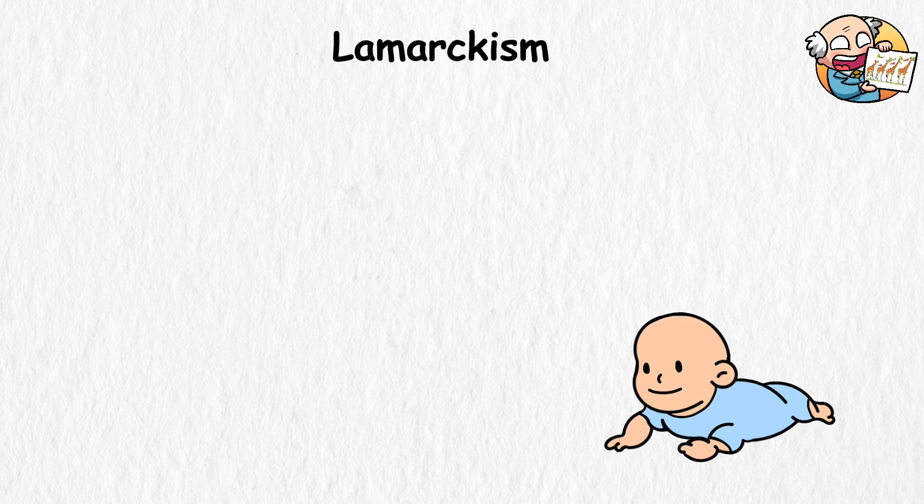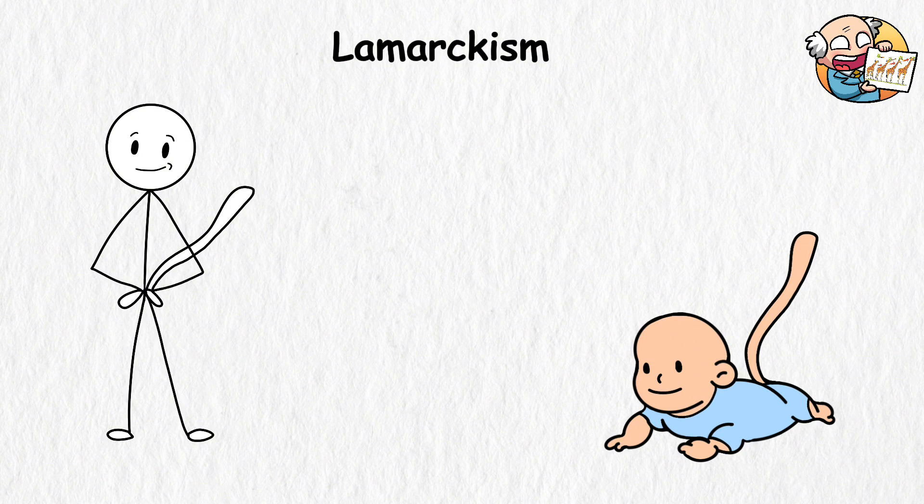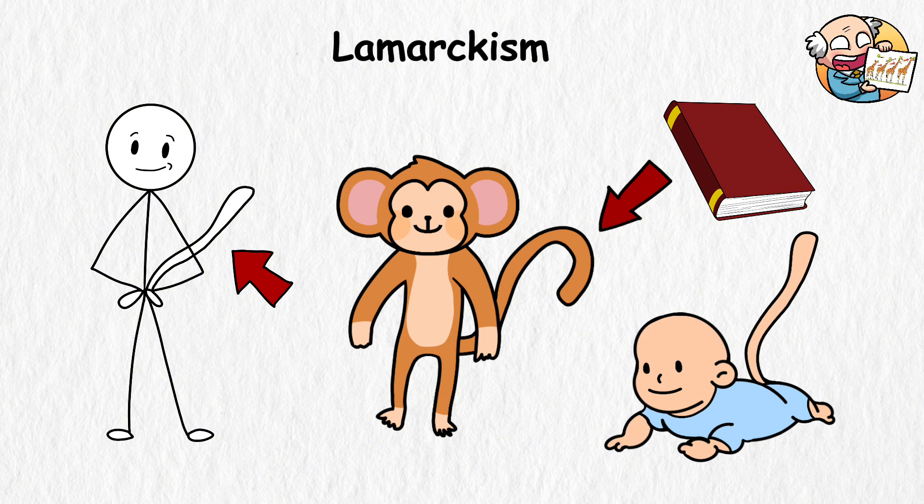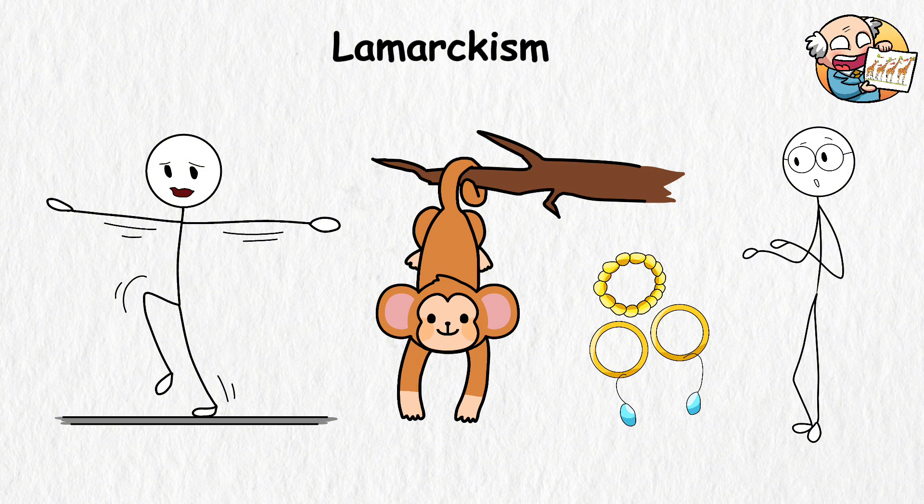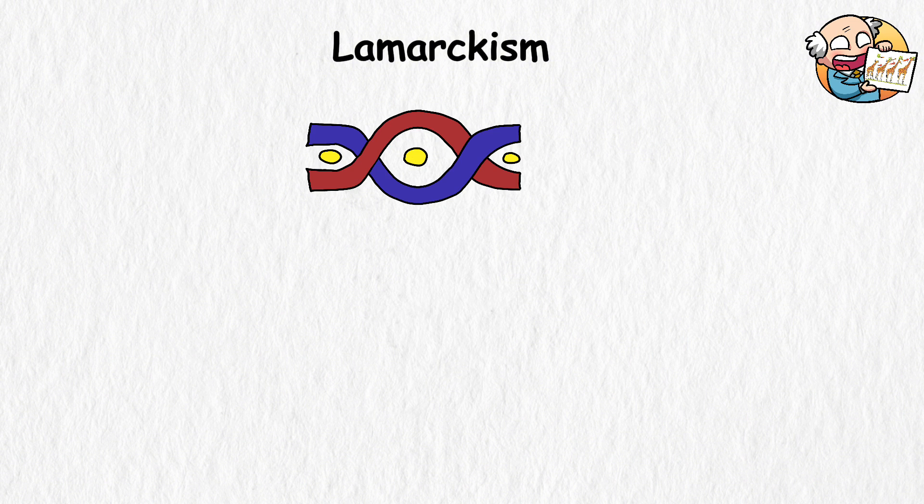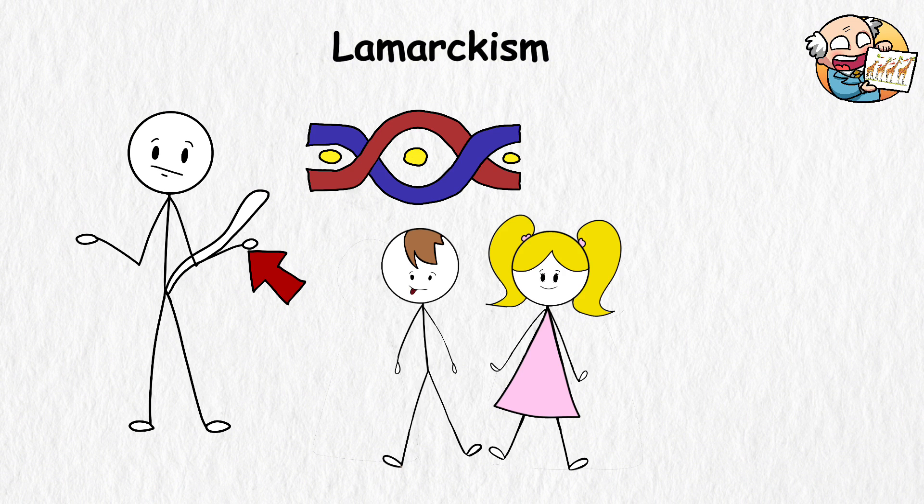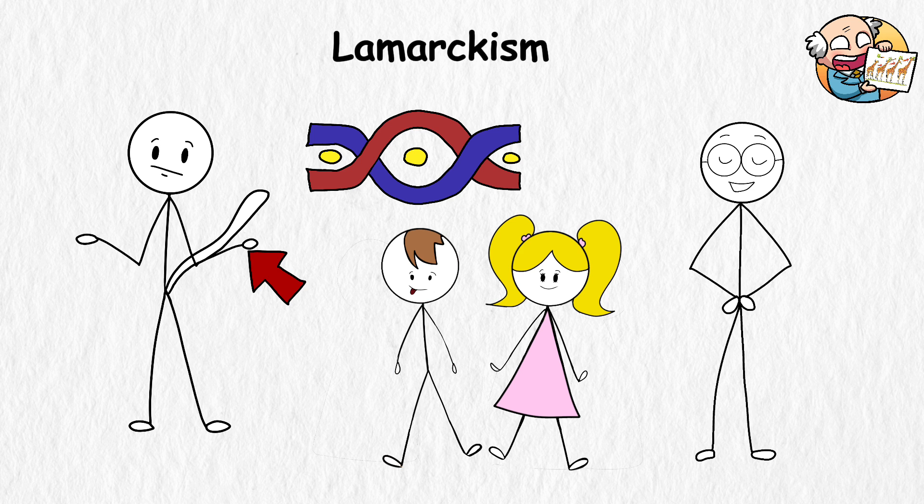Lamarckism. Let's say you're born with a tail, but as you grow older, you realize this tail has no purpose. For monkeys, it's a different story because their tails help them balance and grab onto branches. In your case, it's just a useless accessory that you never used. So your DNA decides to skip the tail in your children's generation.